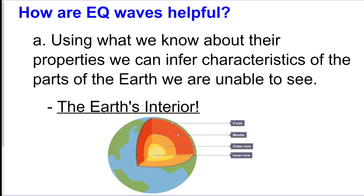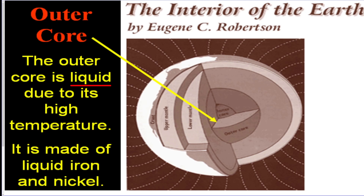We need three seismograph stations to locate an epicenter. Earthquake waves are also helpful because we used them to study the Earth's interior and figured out the Earth is layered. We also figured out that the outer core is liquid because S waves were not able to pass through that layer.